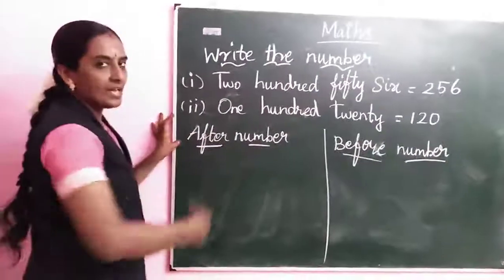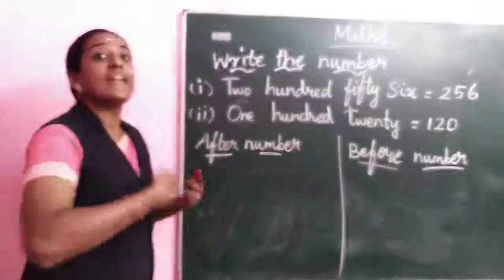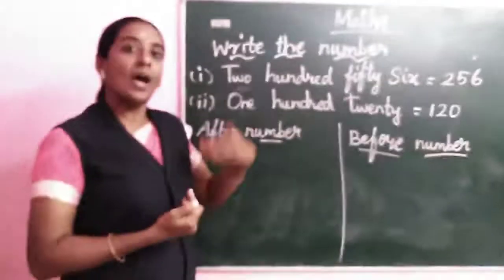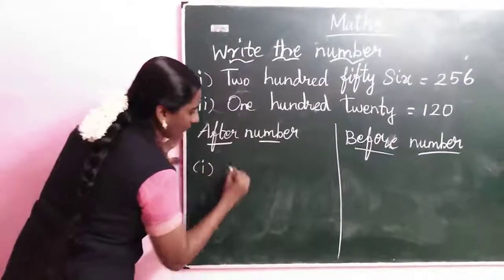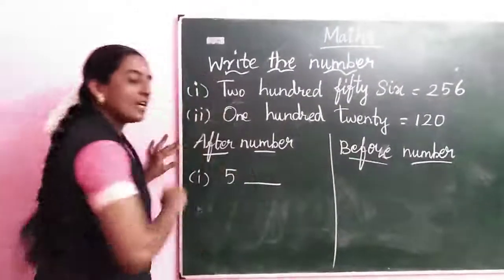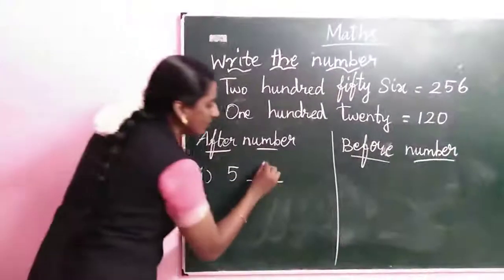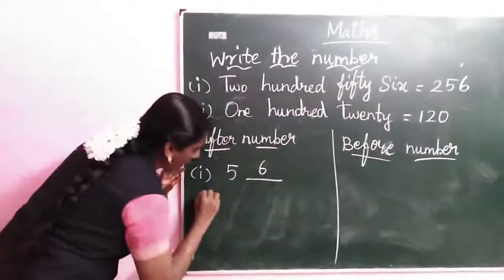Next, we are going to the after number. After means next number. 5. 5 after, what is the 5 after? Next number is 6.